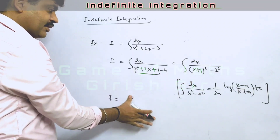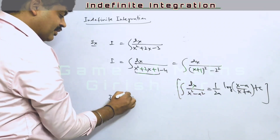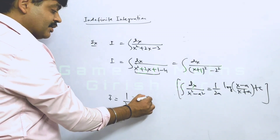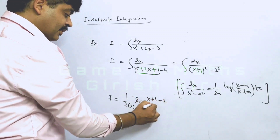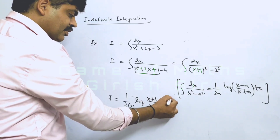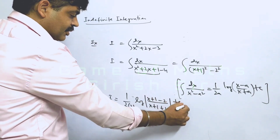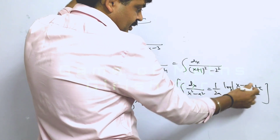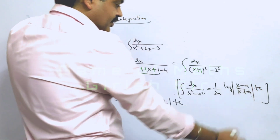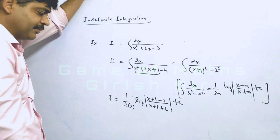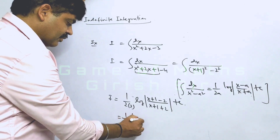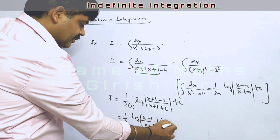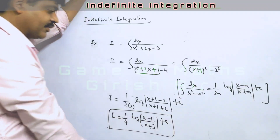That integral, writing it directly using the formula: (1/2a) log|(x − a)/(x + a)| + c. You can also write modulus signs around the log argument. It further simplifies to (1/4) log|(x − 1)/(x + 3)| + c. This is the answer to the question.